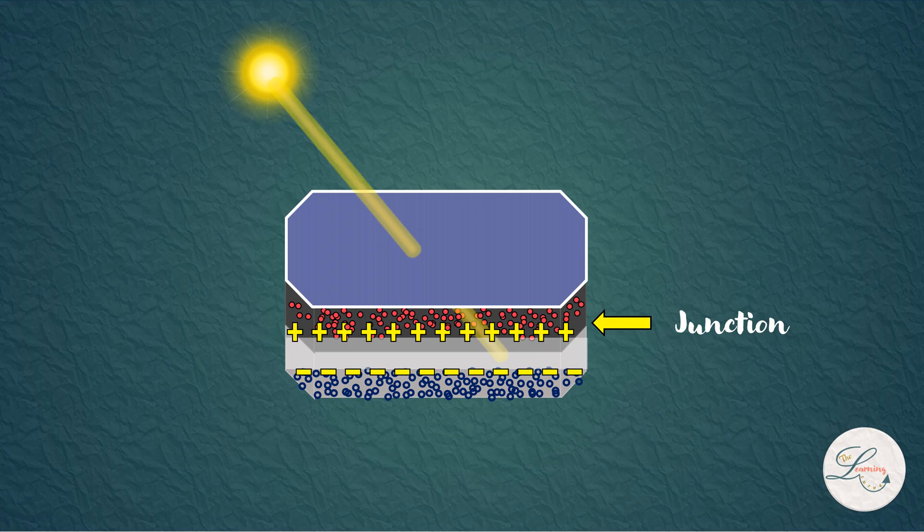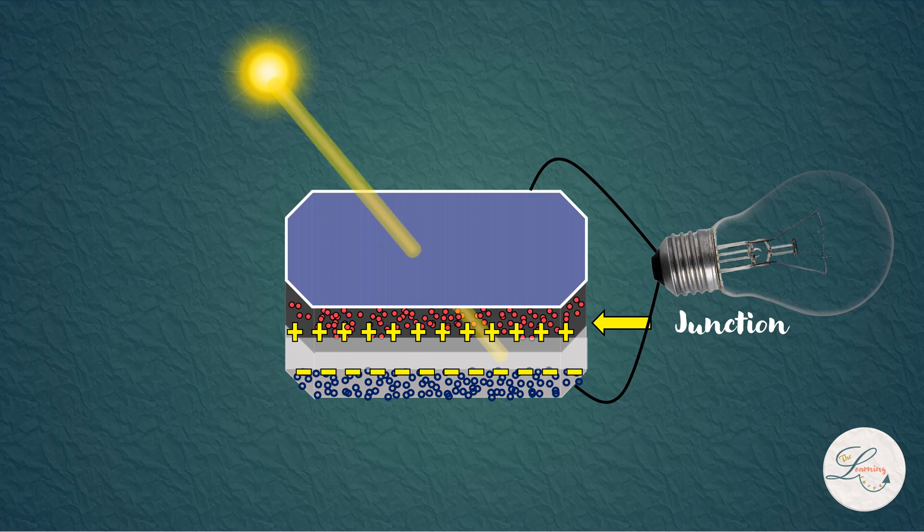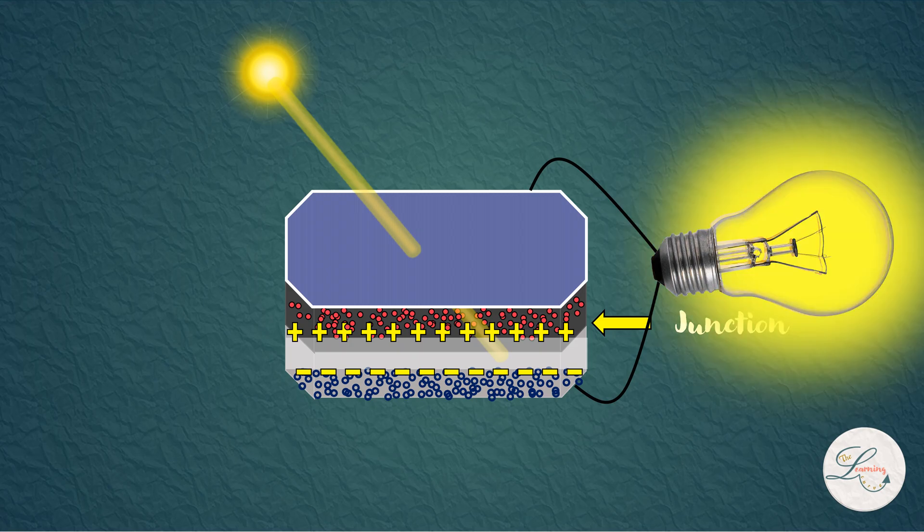This again increases the concentration of electrons in one side and the concentration of holes in the other side. Therefore, this acts as a battery. That is, when we connect a load across it, the current will flow through it. This way, the solar panel generates DC electricity.